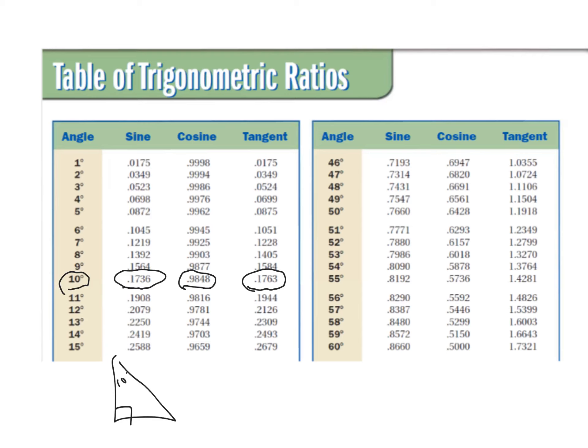We're not going to use trig tables, but trig tables are actually stored inside your calculator. What we're going to focus on before we get into all of this is what's called sine, cosine, and tangent. These are just names of ratios.